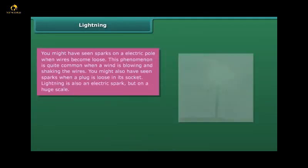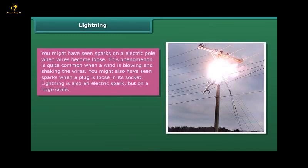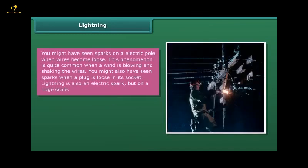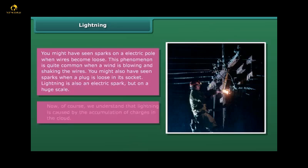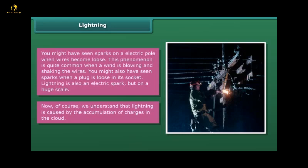Lightning: You might have seen sparks on an electric pole when wires become loose. This phenomenon is quite common when wind is blowing and shaking the wires. Lightning is also an electric spark but on a huge scale, caused by the accumulation of charges in the clouds.